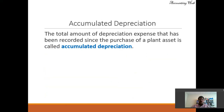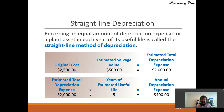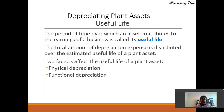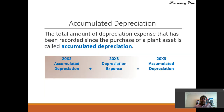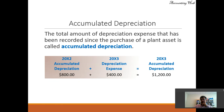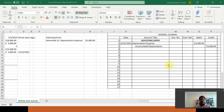What is accumulated depreciation? The total amount of depreciation expense that has been recorded since the purchase of a plant asset is called accumulated depreciation. For instance, in this scenario: beginning balance eight hundred dollars, plus depreciation expense of this year, gives accumulated depreciation of twelve hundred dollars.